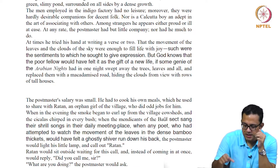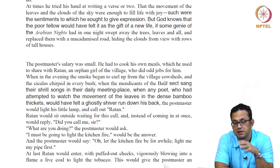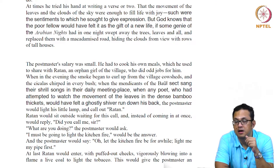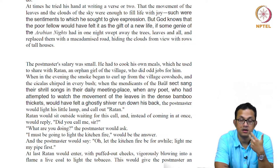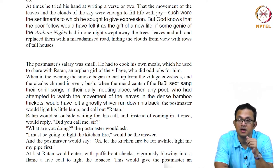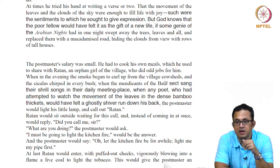The postmaster's salary was very small and he had to cook his own meals, but he had a little girl called Ratan who would run errands and do odd jobs for him. He started teaching her — making her literate — teaching her the letters of the alphabet, which she picked up very quickly. In a way he becomes a mentor figure for the little girl in that rural setting.